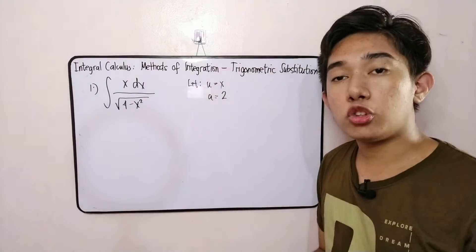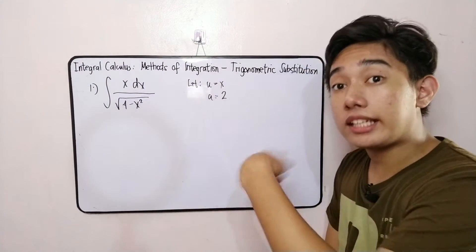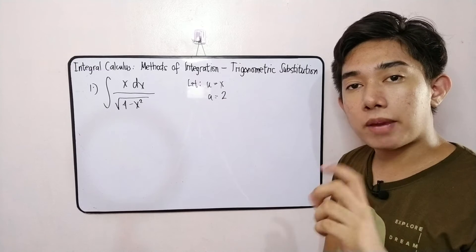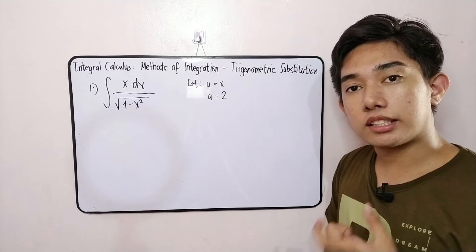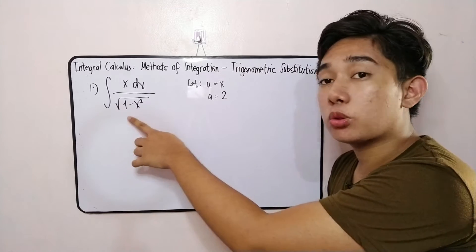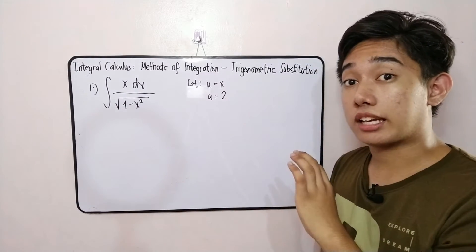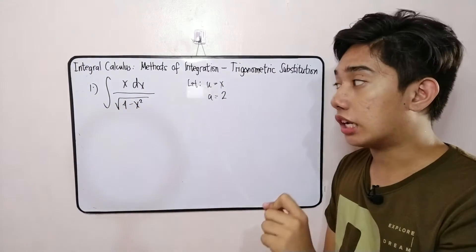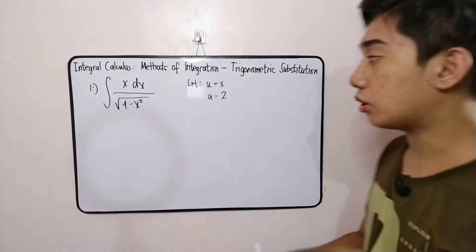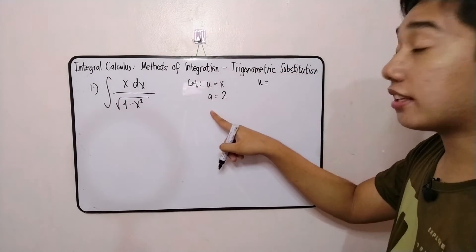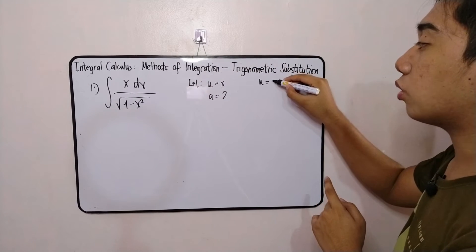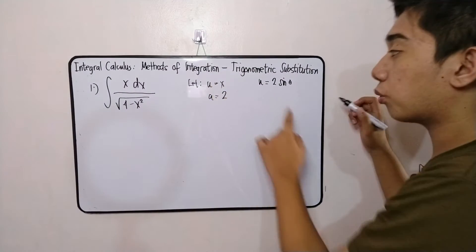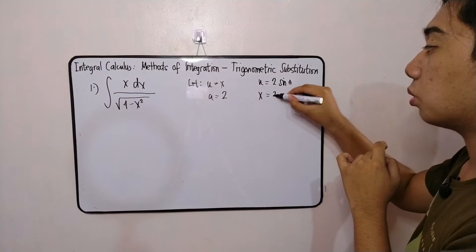We observe the inner part of the radical sign, which is 4 minus x squared. To substitute a trigonometric identity, we observe the constant and where u is placed. We see this is in the form a squared minus u squared. For this case we use the substitution u equals a sine theta, where a is 2. Therefore u equals 2 sine theta, and since u equals x, we have x equals 2 sine theta.